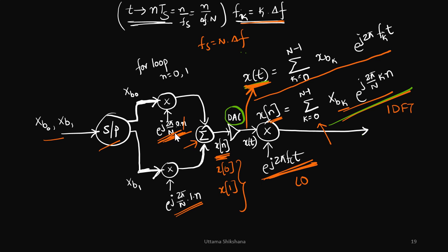I will get x of t. This x of t is same as what we had seen in the earlier circuit. And then we can do further the upconversion with fc and we can transmit it. So here you can clearly see two things.